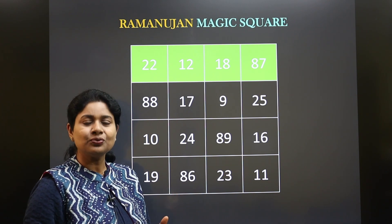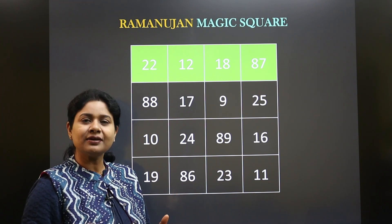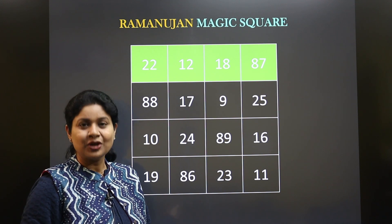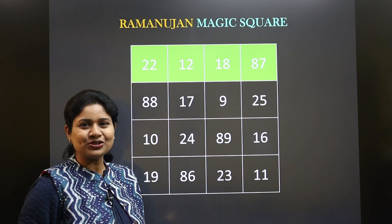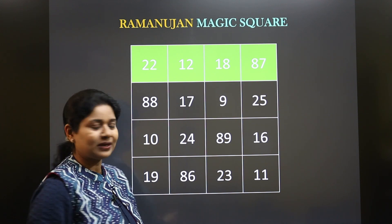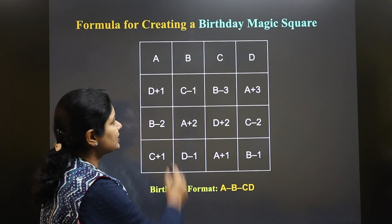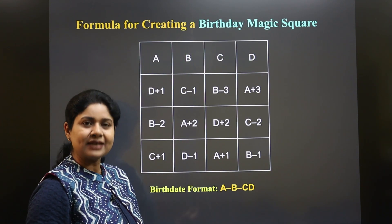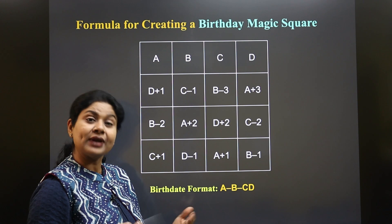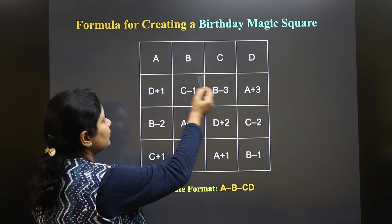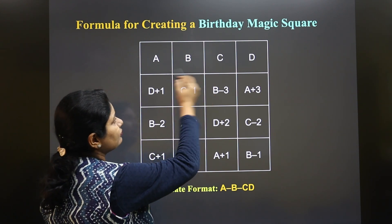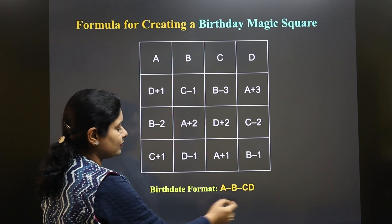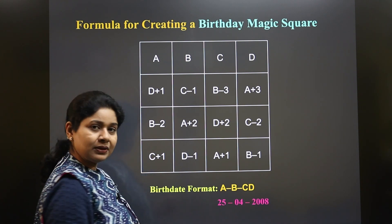Let me share with you that you can create a magic square for your birthday also. Here I am going to show you how. This is the formula that can be used to create a magic square for any date, where in the first row it is written A, B, C, D — this is actually the birth date format.